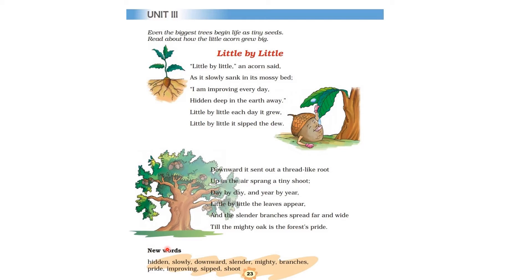"Downwards" means when something goes down. Upwards is when you are going up, and when you are coming down, it is called downwards. "Slender" means thin — thin and slim and trim. You know, the branches are like that.